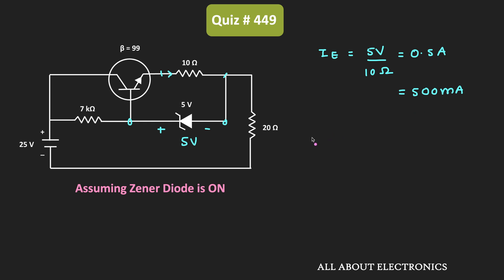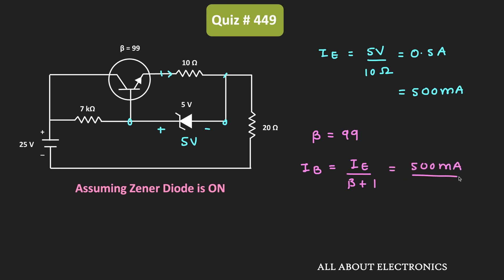We have been given that β of the transistor is equal to 99. We know that the base current IB = IE / (β + 1). So in this condition, IB = 500mA / 100 = 5mA. That means if this Zener diode is in the ON condition, then the base current IB will be equal to 5mA.